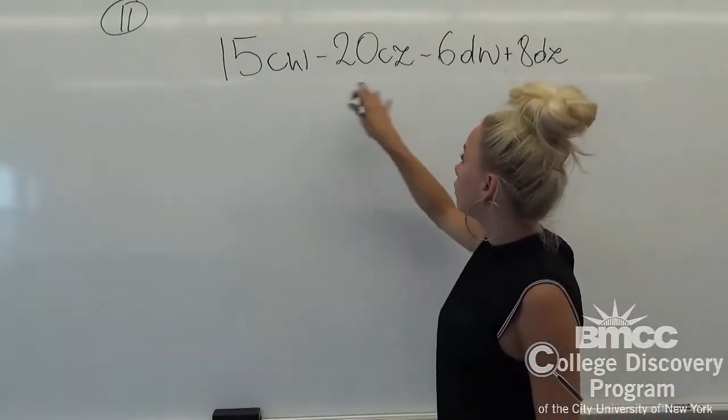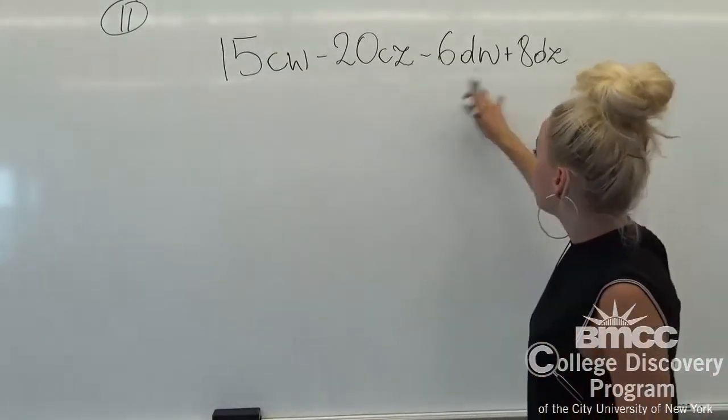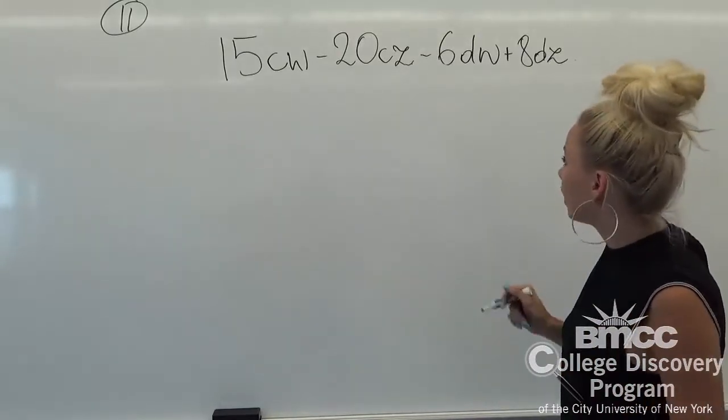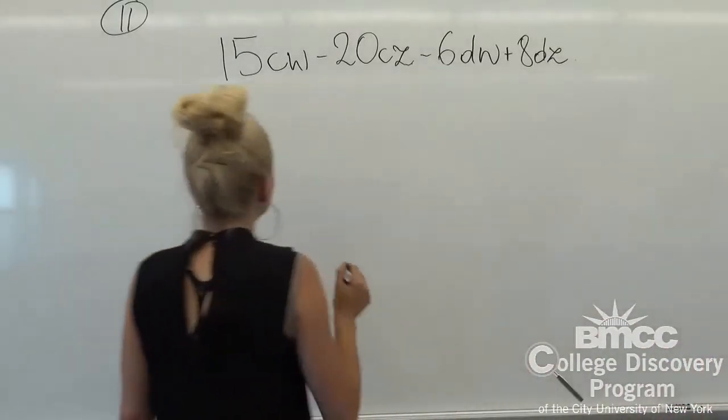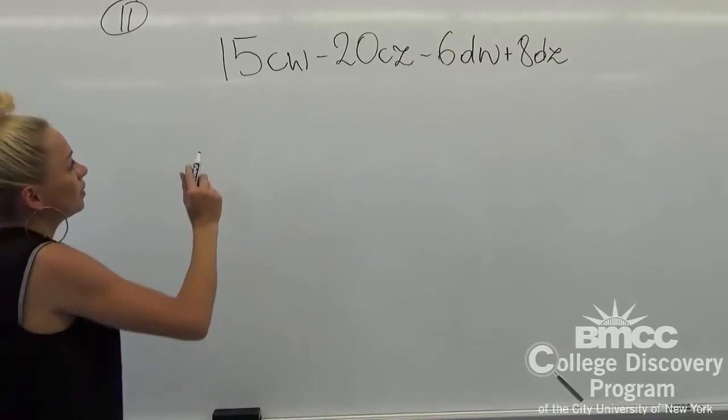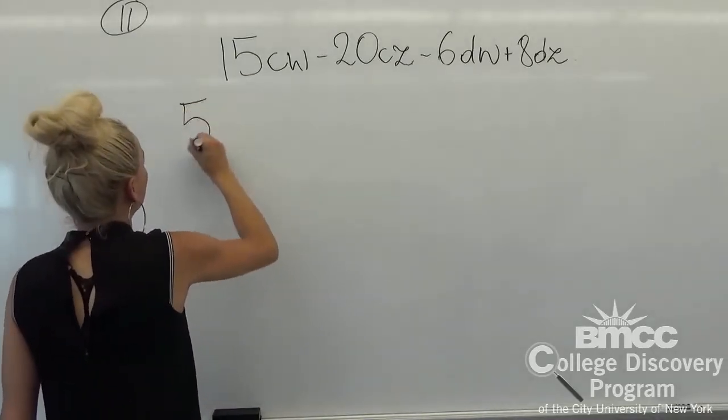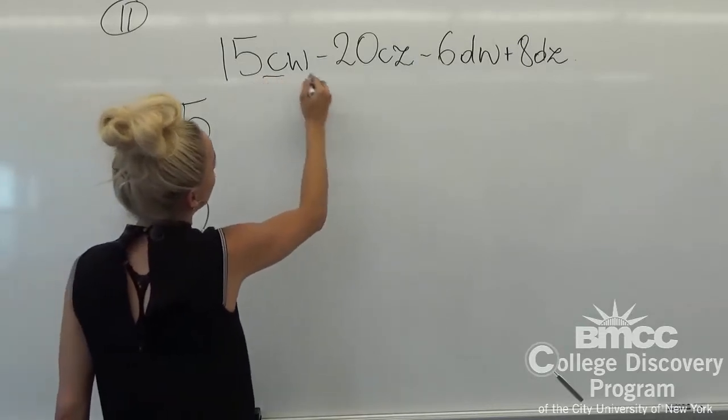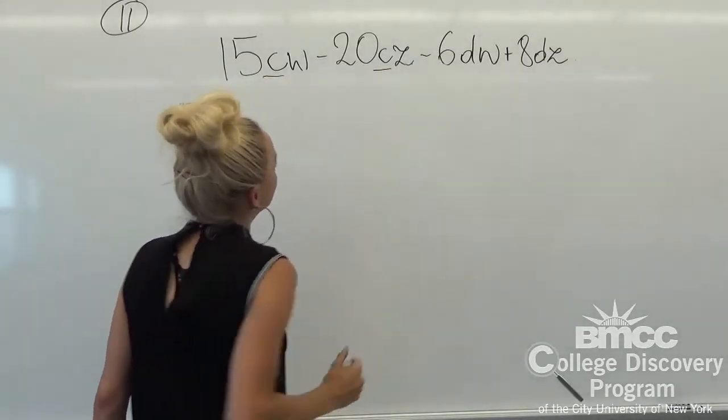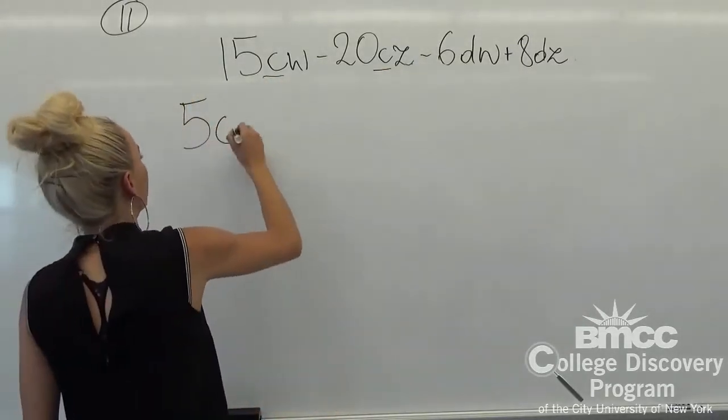Let's have a look at our first two terms first. From the first one we can see that we could factor out 5 out of both of them, and then we can see that c is common too, so we can factor that out.